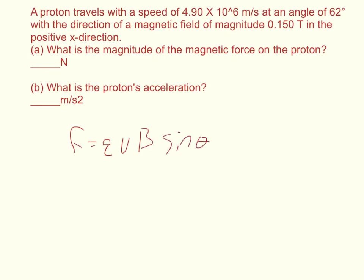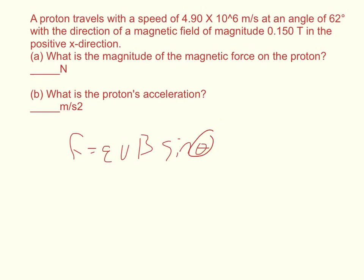Since we're talking about a point particle, this sine of theta is with respect to being parallel. Being parallel would make this term 0, and being at 90 degrees would make this term turn to 1. In this case we're 62 degrees from being parallel.